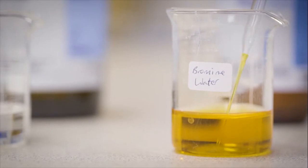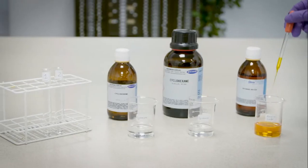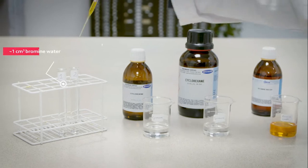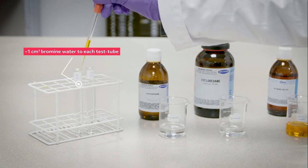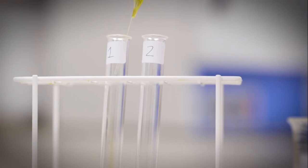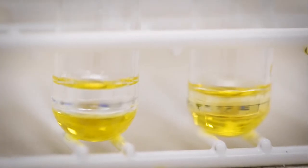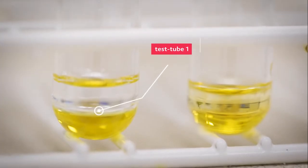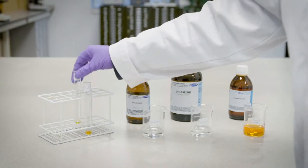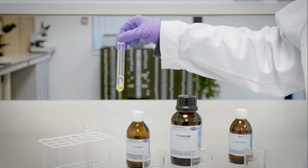Then, bromine water is added to each test tube. At first, nothing appears to happen in test tube 1 containing cyclohexane. As the reaction can only happen at the boundary between the two phases, the mixture is shaken.